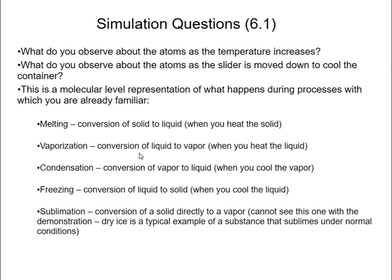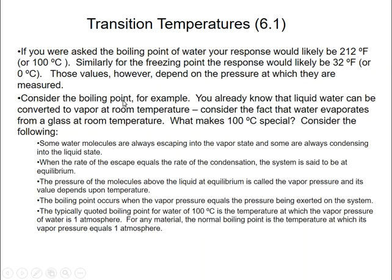Vaporization is where you convert a liquid into a vapor by heating it — like boiling a pot of water on the stove. Condensation is the opposite: cooling a vapor turns it into a liquid. Freezing is taking a liquid to a solid. These are pairs of opposites: melting/freezing and vaporization/condensation. There is also sublimation, where a solid goes directly to vapor. The most famous example is dry ice, which goes straight from solid to vapor without leaving anything behind.